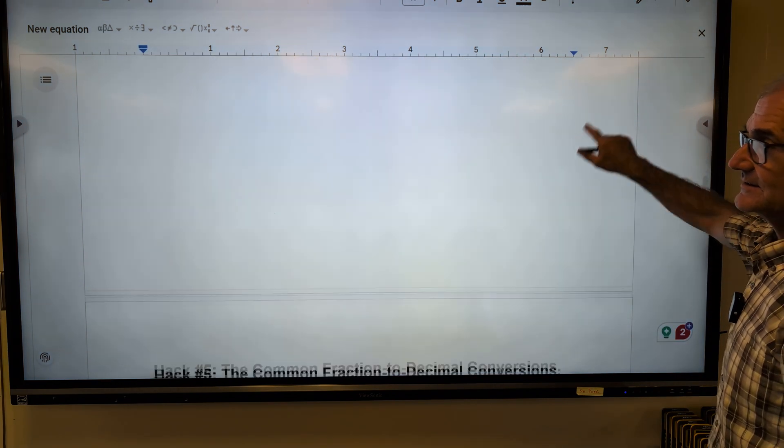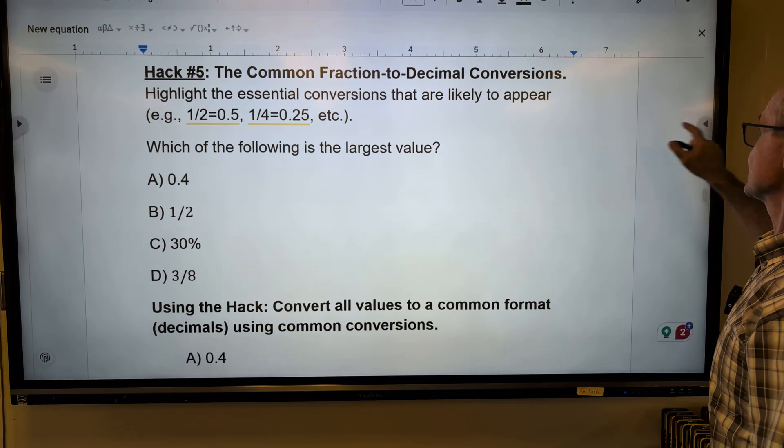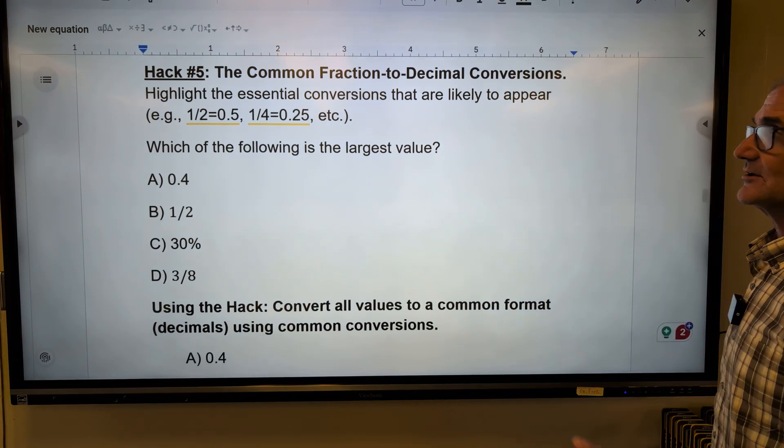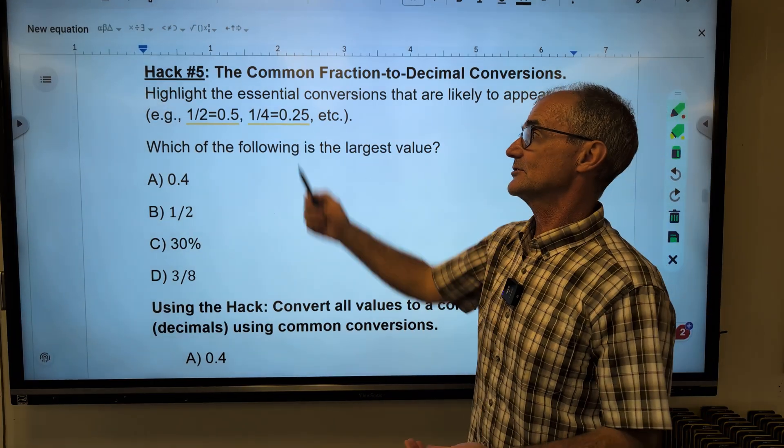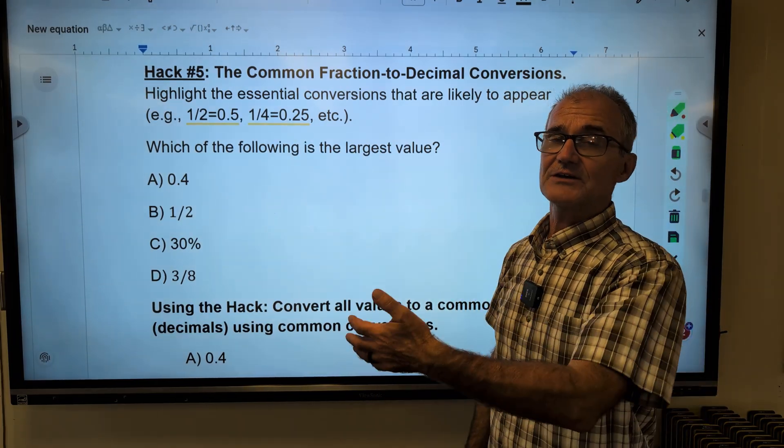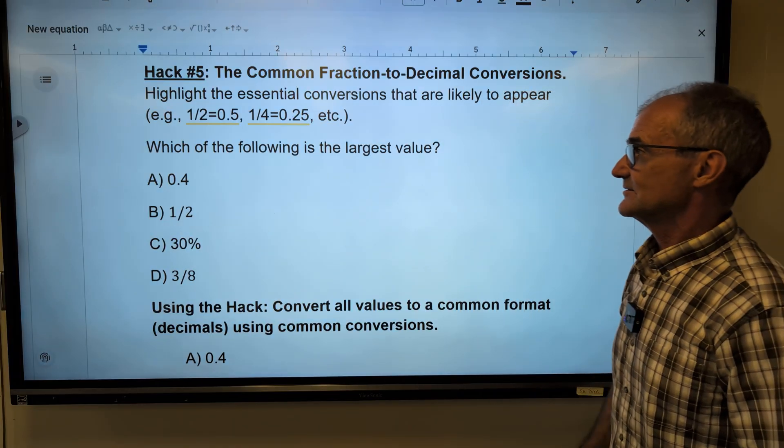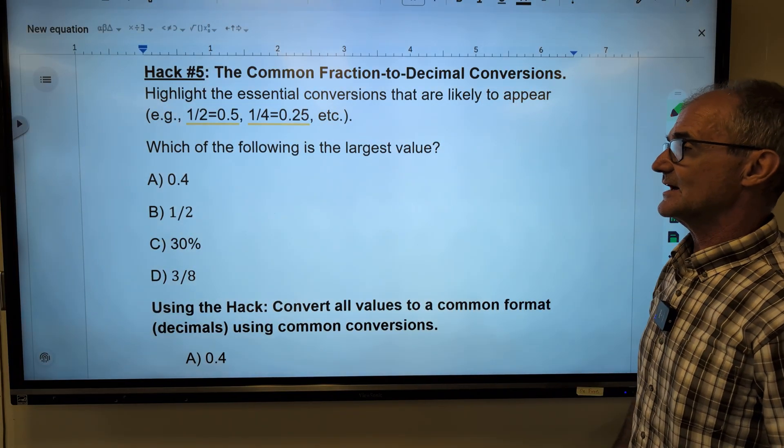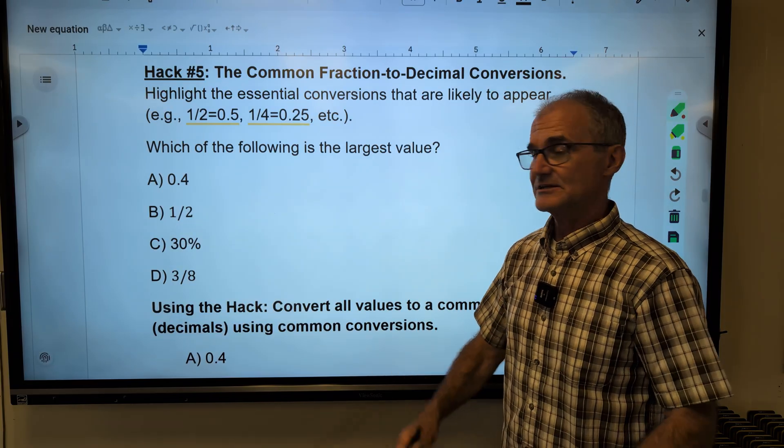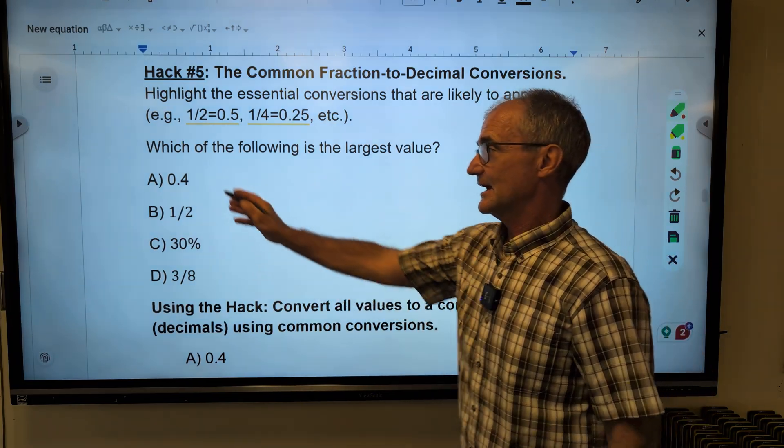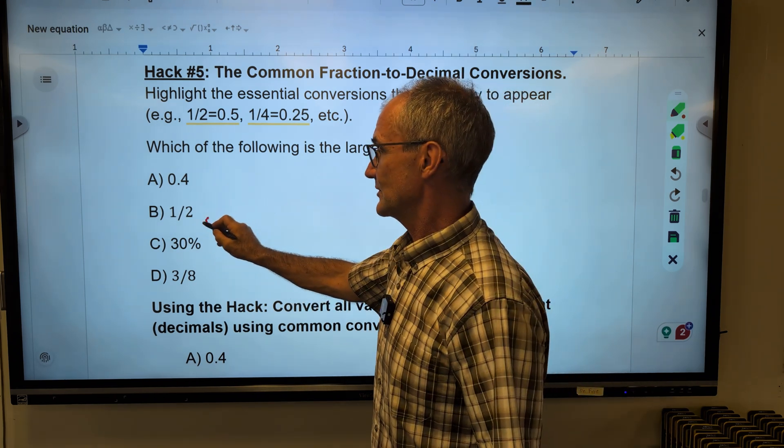All right, hack number five here, the common fraction to decimal conversions. And these might seem a little hard, but you know that a quarter in your pocket is 25 cents. So you know a quarter and 0.25. A half dollar piece is 50 cents. So a half is 50 cents. So which of the following is the largest value? Well, I can't really compare those until they're in the same units. So I'm going to convert everything to decimals. I have 0.4. One half, well, one half is 0.5.